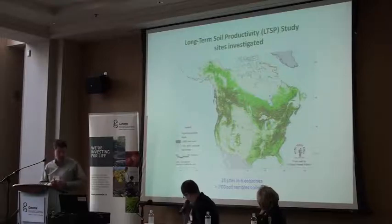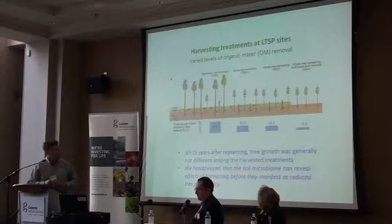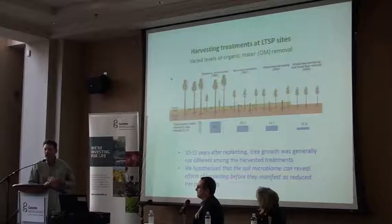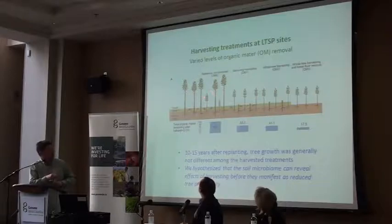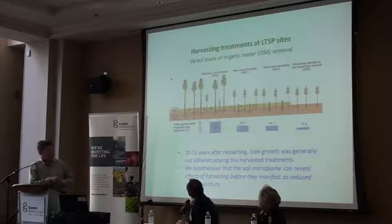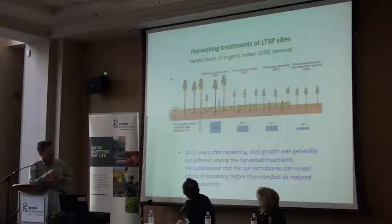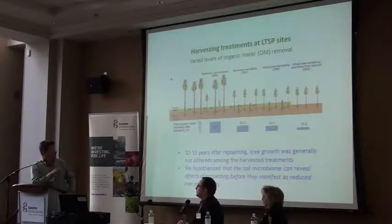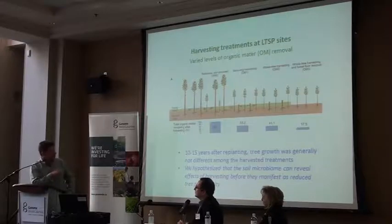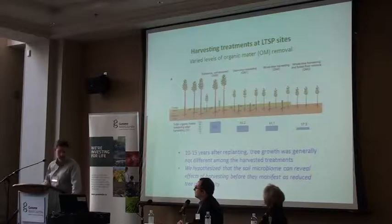We took over 700 soil samples from 18 sites in six different ecozones spanning North America. The main point of this study is asking how much organic matter you can sustainably take out of forests. They have the same very simple experimental design at all sites, where there are plots harvested 10 to 15 years ago, reference plots that were not harvested, and additional treatments with differing amounts of organic matter removed — referred to as OM1, 2, and 3 treatments representing increasing removal. Ten to fifteen years after initiation, there's little evidence that trees are being differentially affected by these treatments.